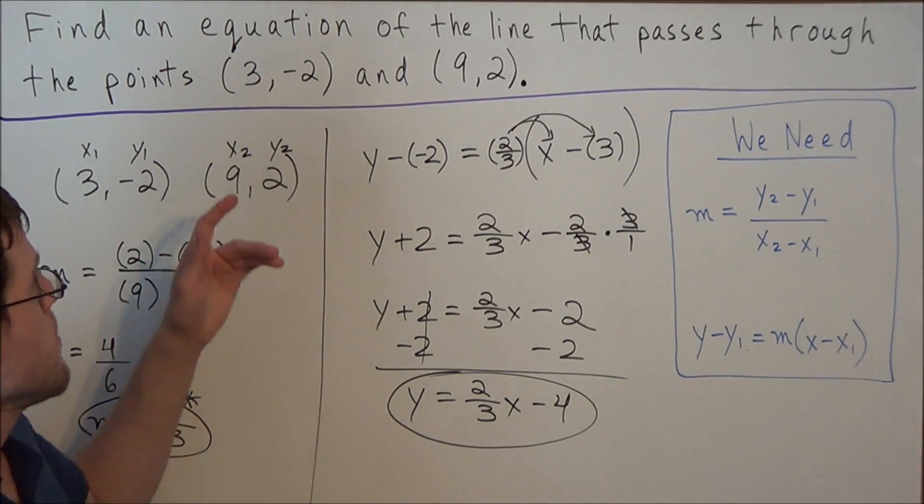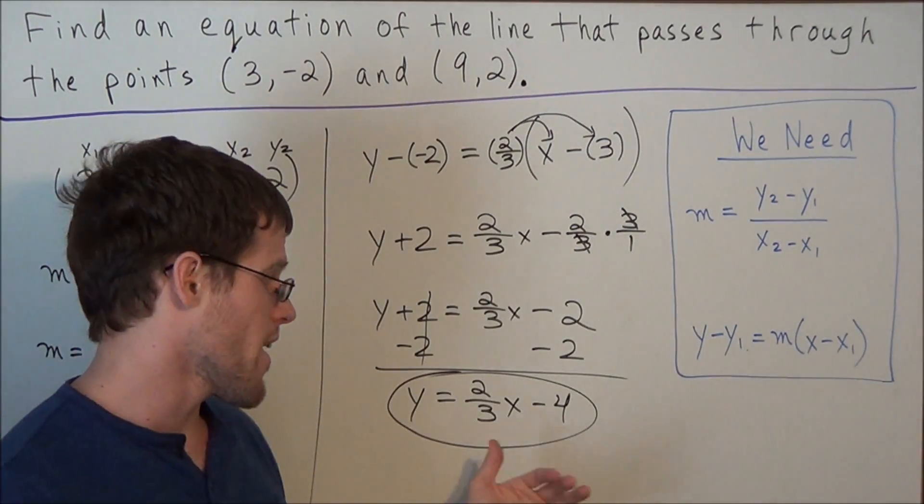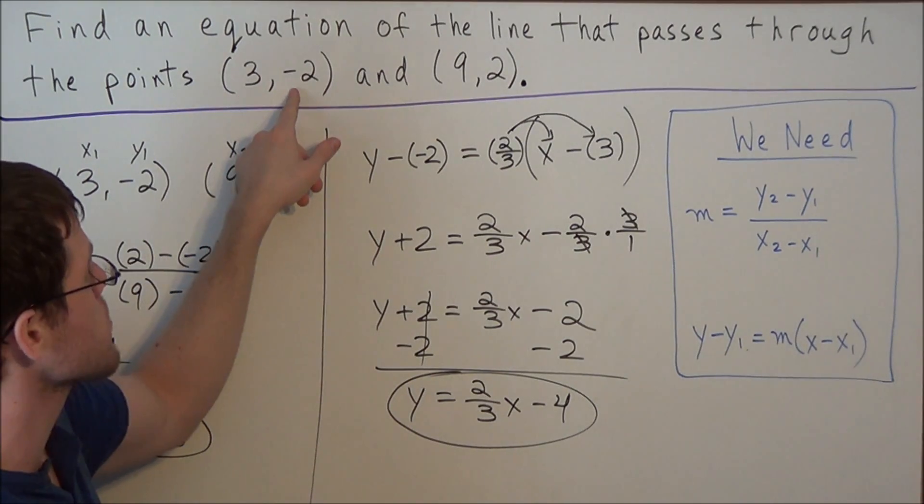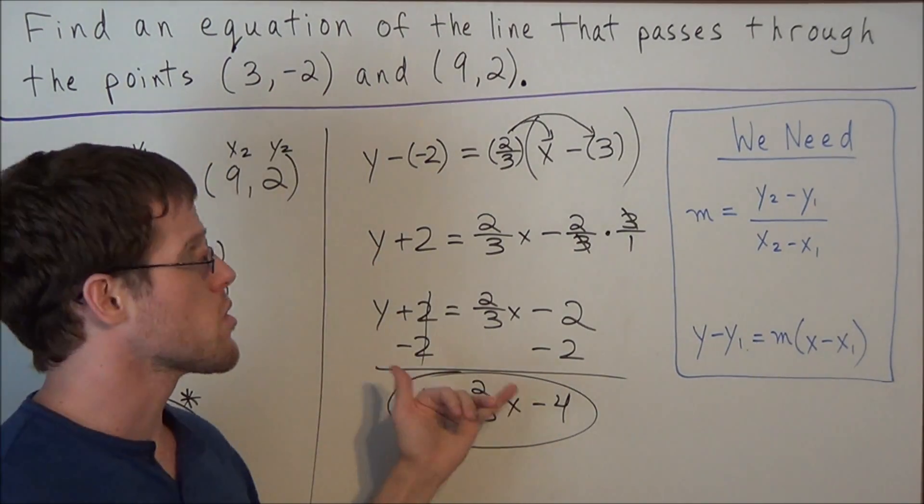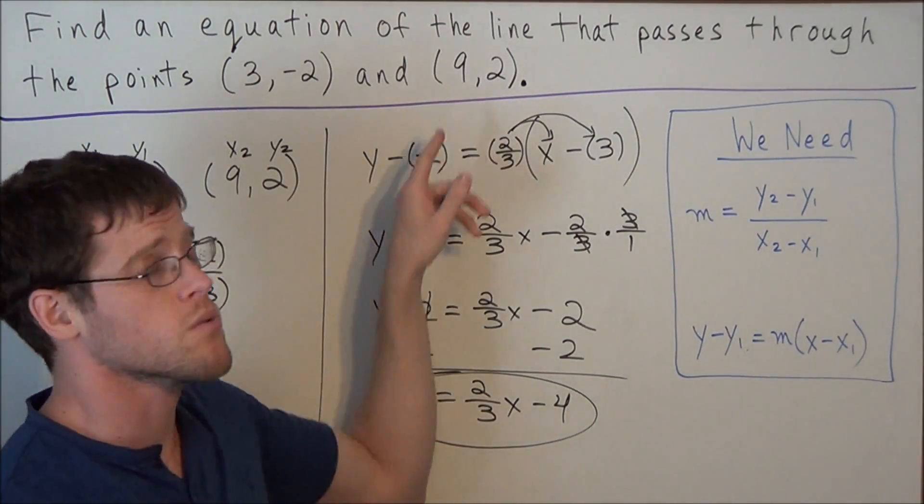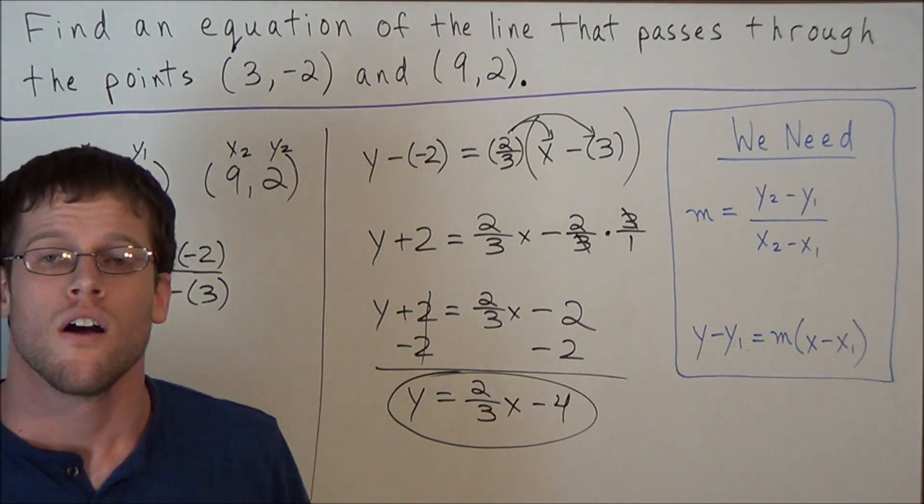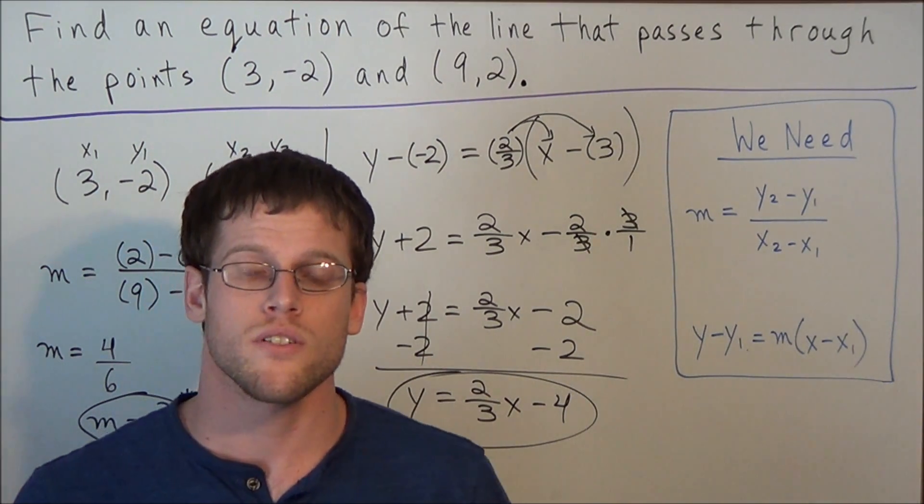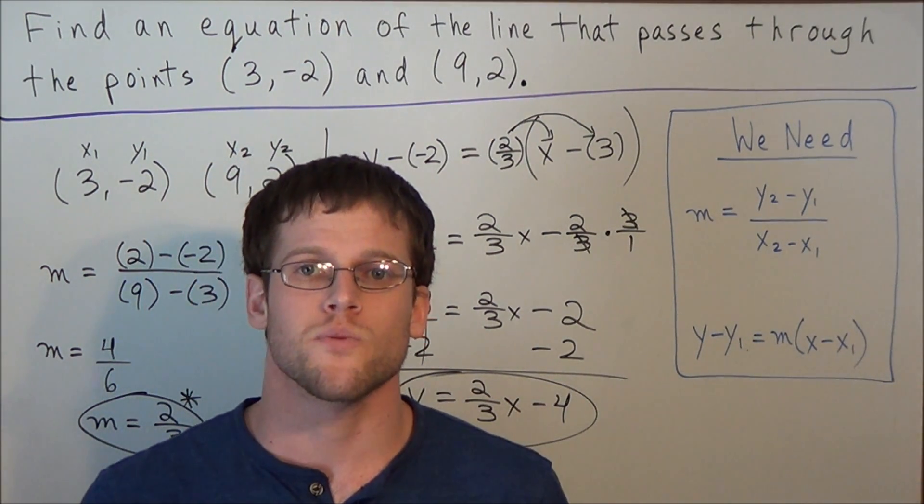And if you do have time, it's usually a good idea to check that the two points are actually on the line. So if you plug in x equals 3 and y equals negative 2, you should get a true equation, and the same should hold for x equals 9, y equals 2. Okay, well this is going to conclude this video on writing the equation of a line that passes through two points. Thank you all for watching, and I hope that this was helpful.